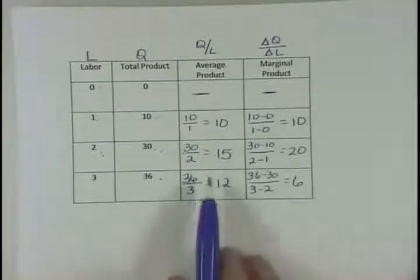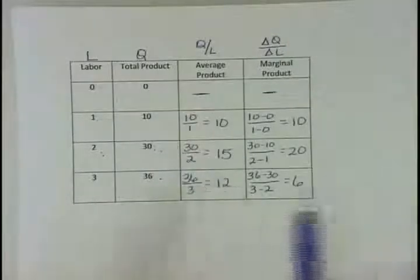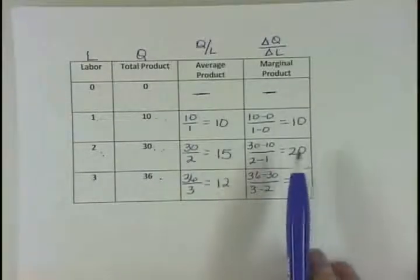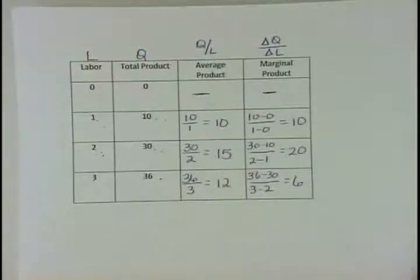So to summarize: average product is just quantity divided by labor, but marginal product requires us to do the change in quantity divided by the change in labor.